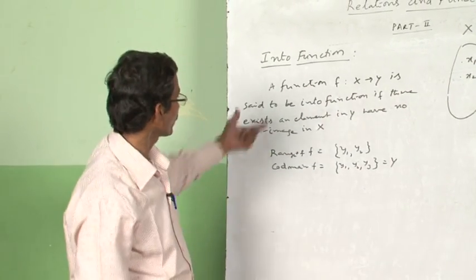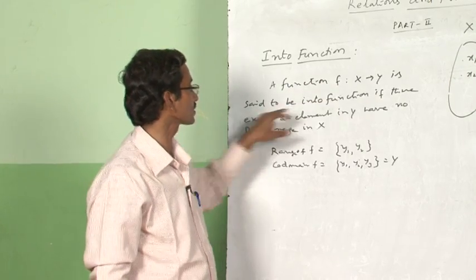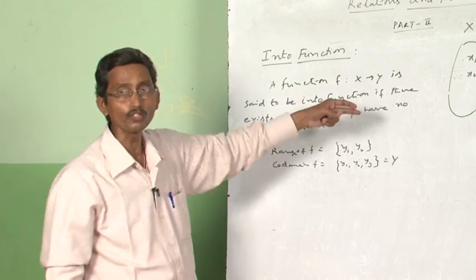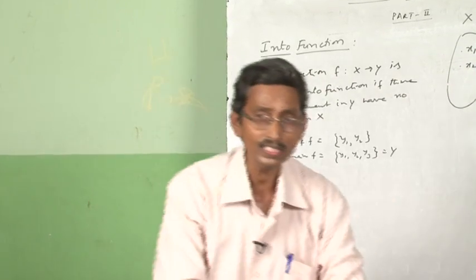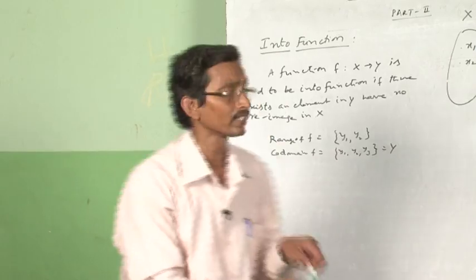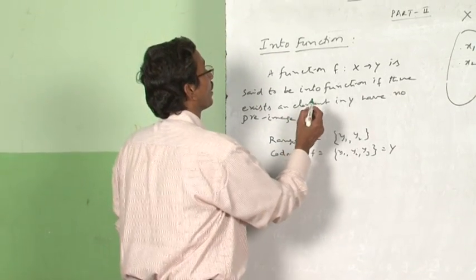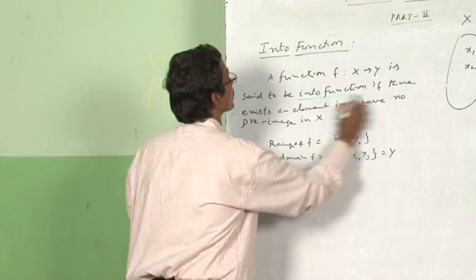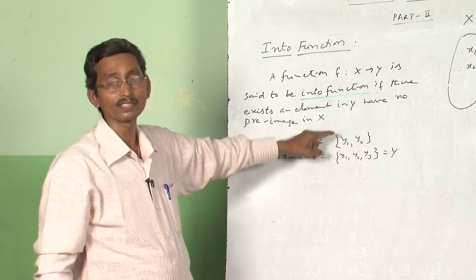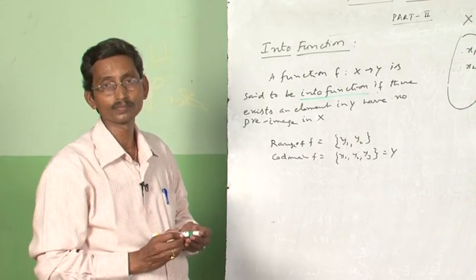So we say that it is an into function. Clearly, F is a function from X to Y and is said to be an into function if there exists an element in Y which has no pre-image in the set X.